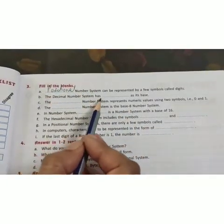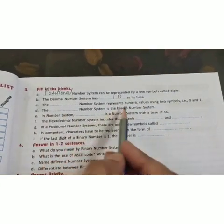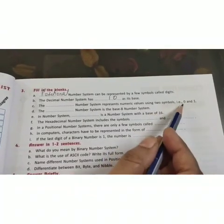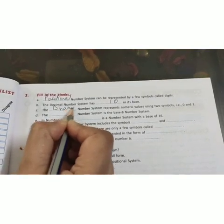The decimal number system has 10 as its base. The binary number system represents numeric values using two symbols that is 0 and 1.